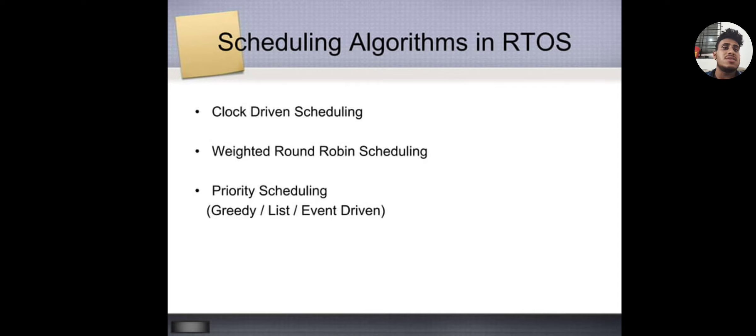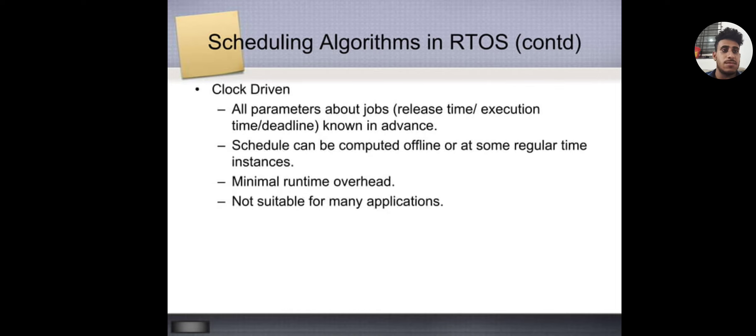Scheduling algorithms in RTOS: Clock-driven scheduling, weighted round-robin scheduling, and priority scheduling which is a greedy algorithm. Clock-driven: All parameters about jobs - release time, execution time, and deadline - known in advance. Schedule can be computed offline or at some regular time instances. Minimal runtime overhead, not suitable for many applications.